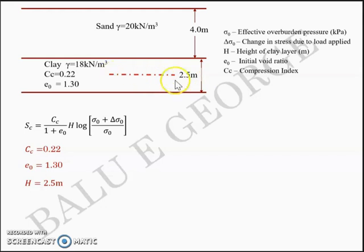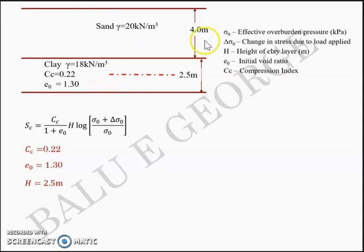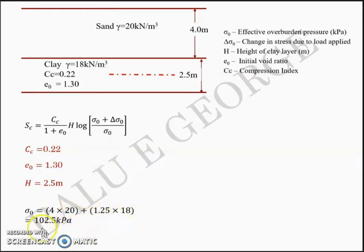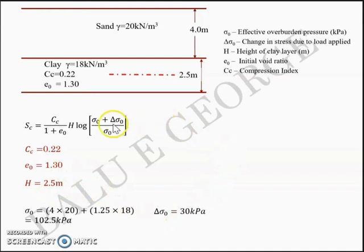At the centerline of the clay layer, we have 4 m of sand (unit weight 20 kN/m³) and 1.25 m of clay (unit weight 18 kN/m³). The water table is not given in Part A, so: σ0 = (4 × 20) + (1.25 × 18) = 102.5 kilopascals. Δσ0 = 30 kilopascals as given. Substituting CC = 0.22, E0 = 1.3, H = 2.5, σ0 = 102.5, and Δσ0 = 30 into the settlement equation gives a settlement of 0.0263 meters.